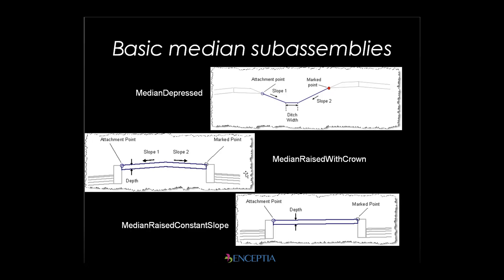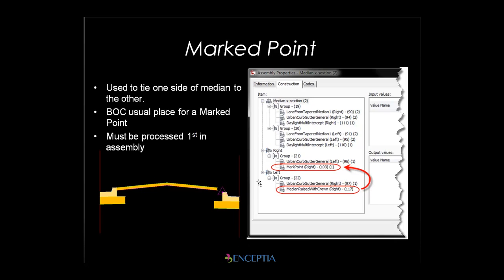They may include shoulders or barriers along with it. There is a marked point in each one of these images, and marked points are crucial when it comes to modeling medians in your corridors. Marked points are used to tie the median from one side of the road to the other. So when you insert a median subassembly into your assembly, it's going to graphically appear the same way in every single drawing and in every single assembly. But it needs this marked point right here as its target, so when a median subassembly is inserted and it's set to a marked point, it will stretch left and right and up and down to always tie to this.